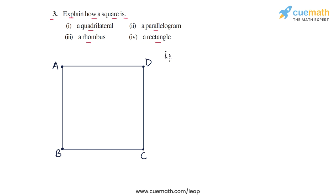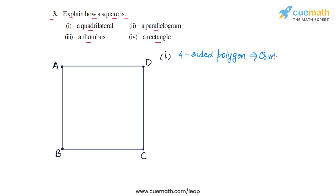The fact that a square is a quadrilateral is easy to see. A square is a four-sided polygon, and any four-sided polygon is a quadrilateral. So a square will surely be a quadrilateral. Part 1 was straightforward.